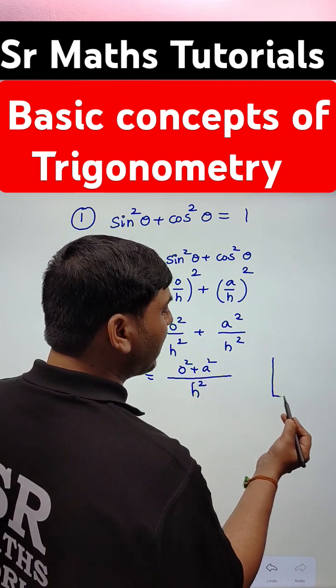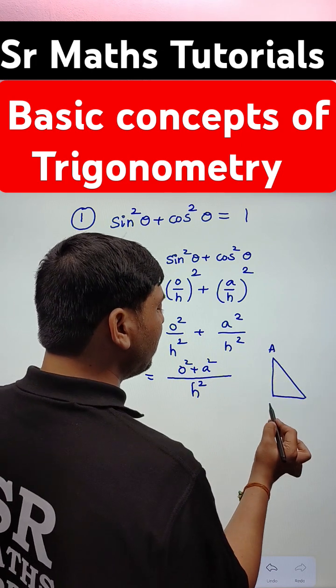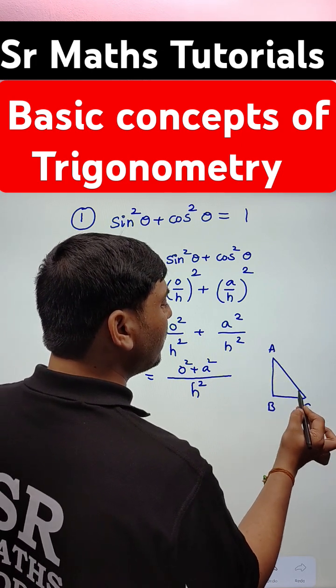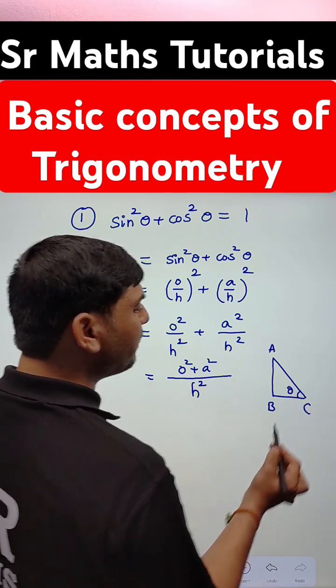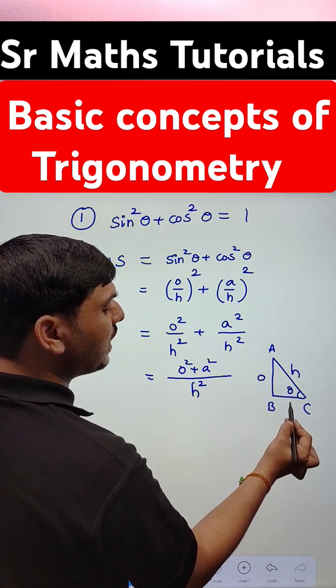Now I am going to draw a right angle triangle. This is capital ABC. Theta is represented at capital C. This is opposite, this is hypotenuse, this is adjacent side.